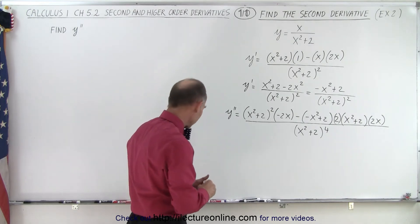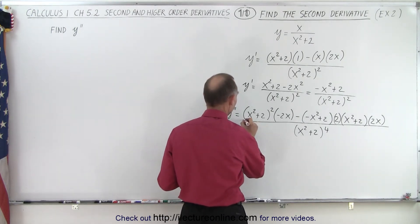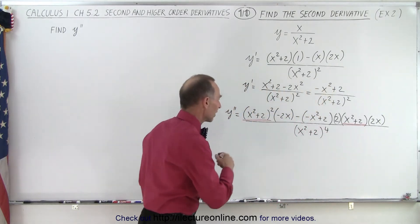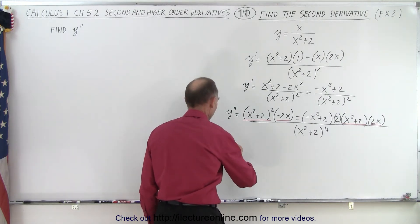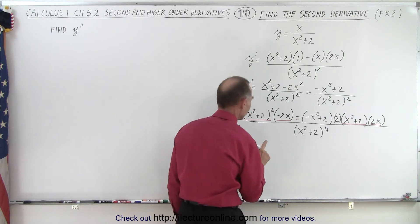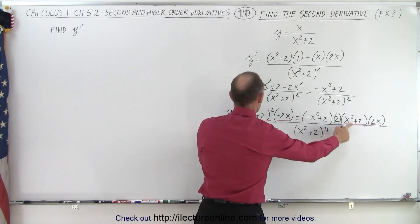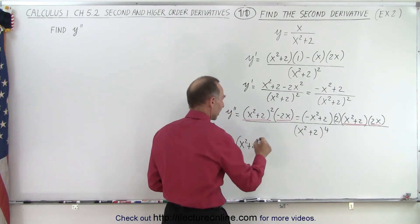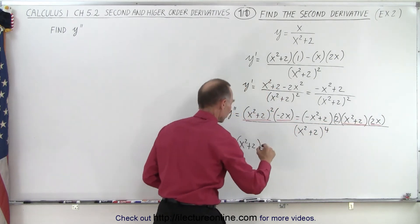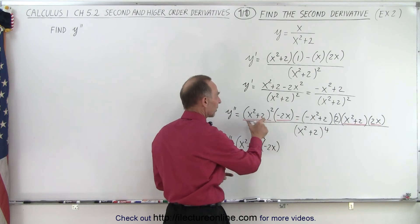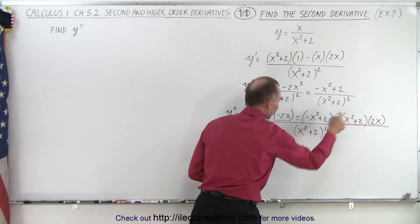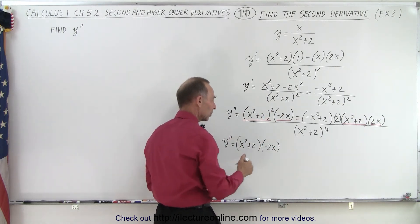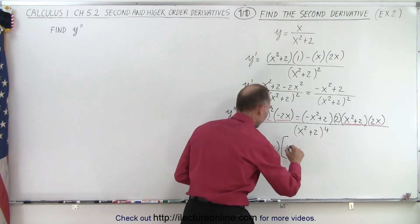To simplify this, let's recognize things that are similar. We have an (x squared plus 2) squared and an (x squared plus 2), so we can factor that out. We end up factoring out (x squared plus 2) — since we have (x squared plus 2) squared here — and also factor out negative 2x. When factoring, we factor out the term with the smallest exponent, which is (x squared plus 2) to the first power.